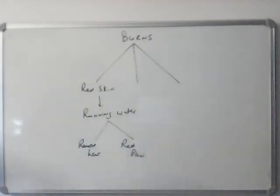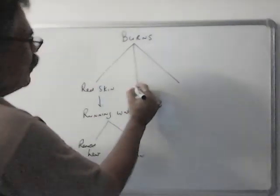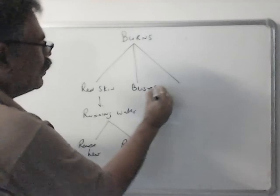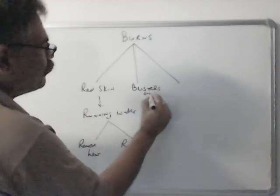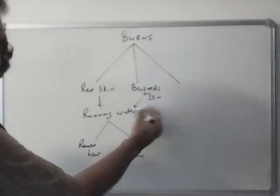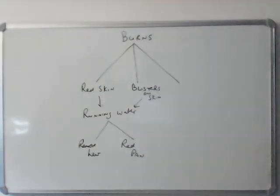The second type of Burn which is more serious, what are the signs for that? Blisters. Blisters on the Skin. First it is same, Running Water. Do not break the blisters. It will become okay after few days.